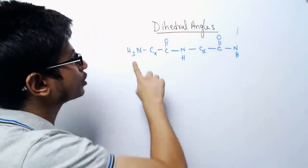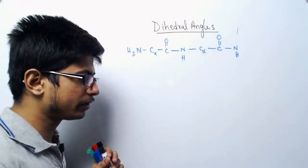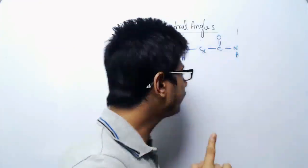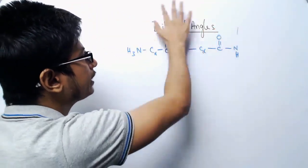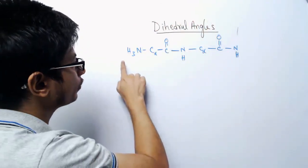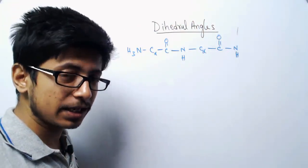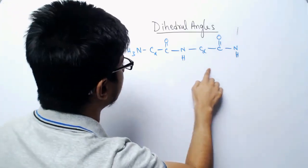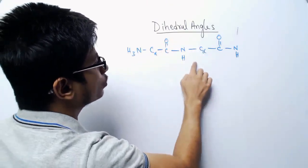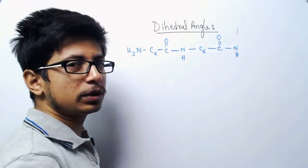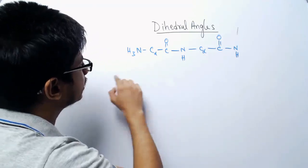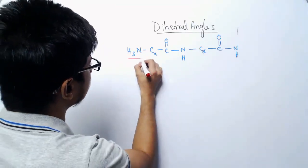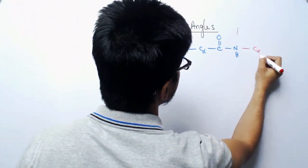The idea of torsional angles or dihedral angles originated from a three-dimensional space angle idea. The whole idea of torsional angles we will talk about for proteins or the amino acid chain, which is also known as a polypeptide. If you look at this polypeptide, it contains three different amino acid chains linked with one another. There is an N-terminal of the amino acid and a C-terminal of the amino acid.